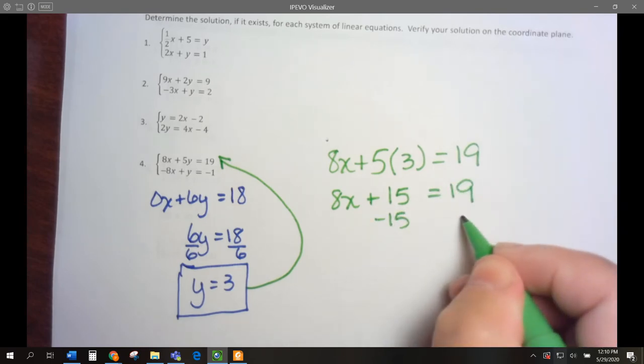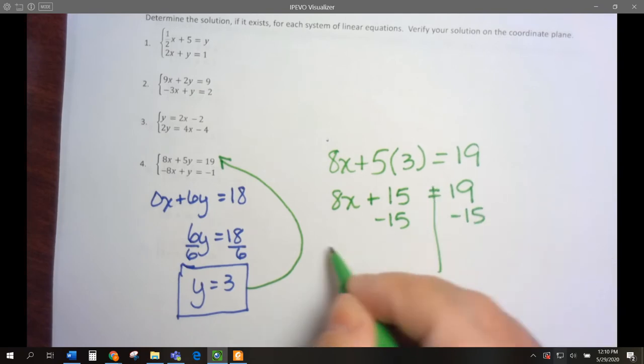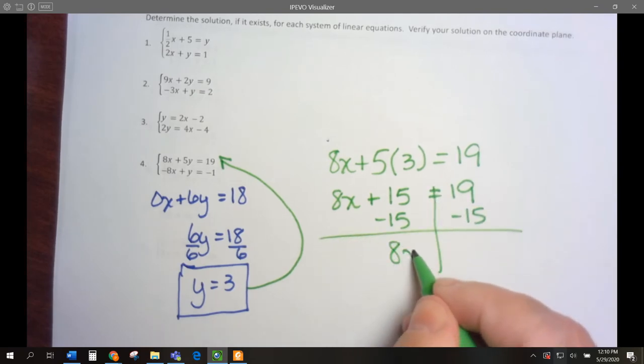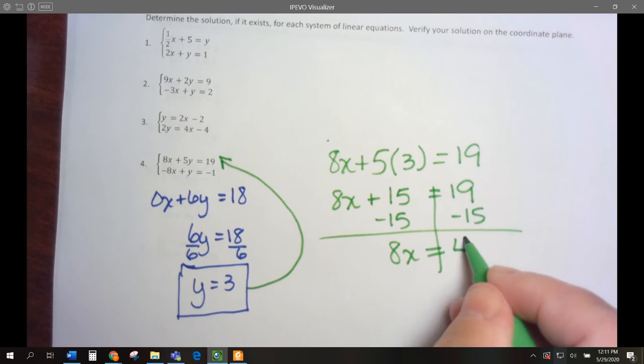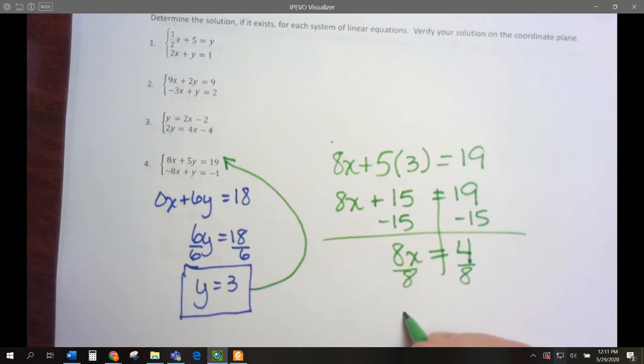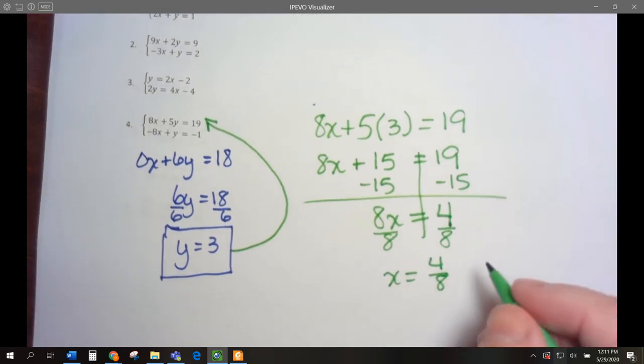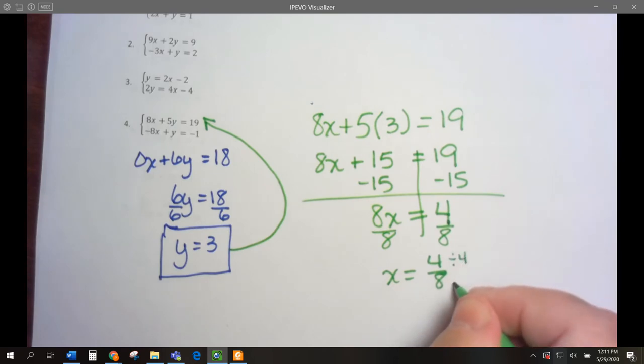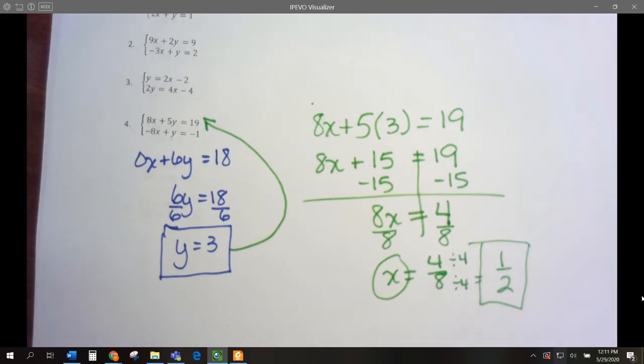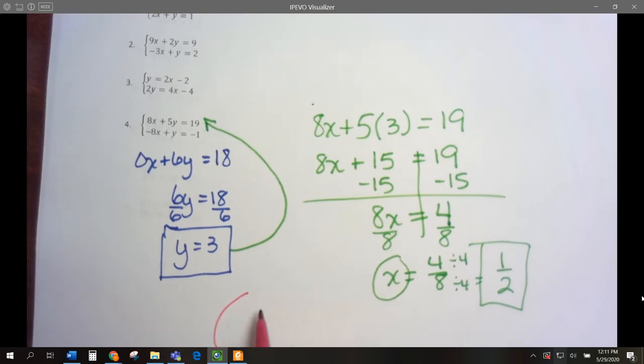I'm going to subtract 15 from both sides. 8x equals 4. Divide by 8, and x is 4 eighths. We can simplify that by dividing by 4, numerator and denominator, and we get 1 half. So our x is 1 half. The solution to this equation is x is 1 half and y is 3.